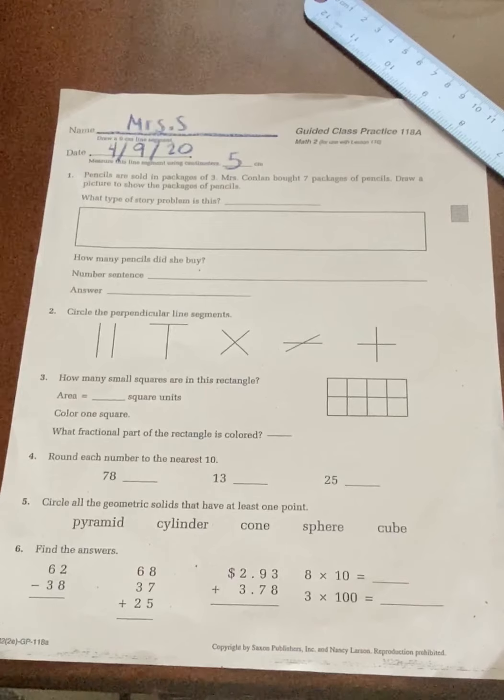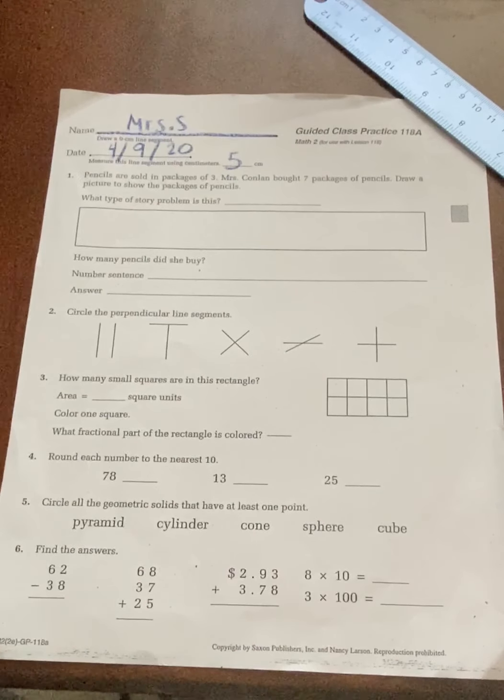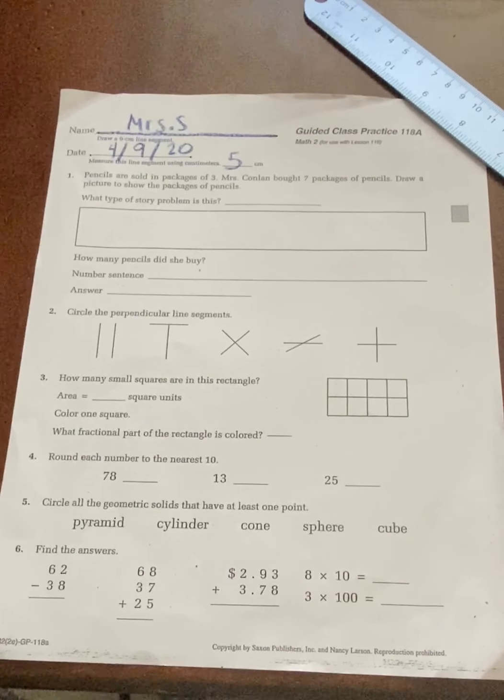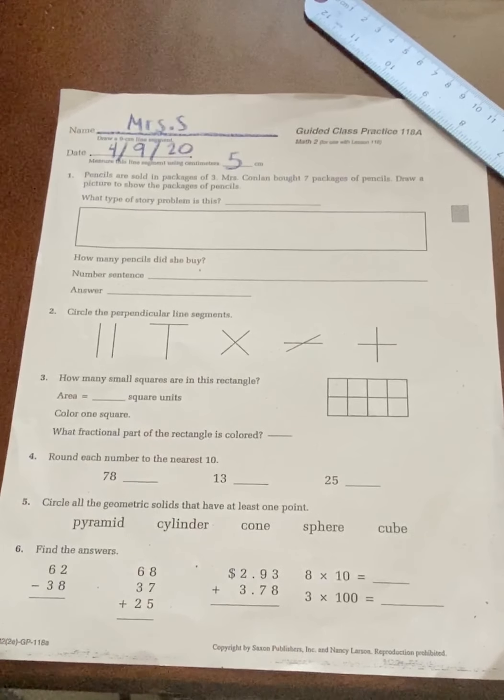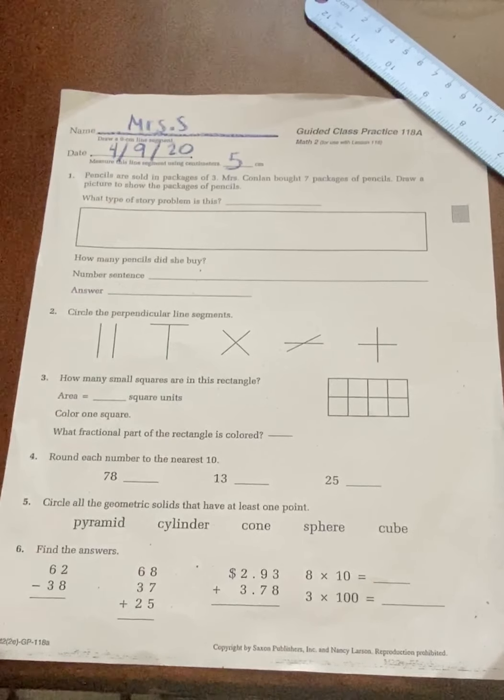And then it says what story problem is this? So first we're going to talk about how many are in each package. It says are sold in packages of three. So there are three things in each package.